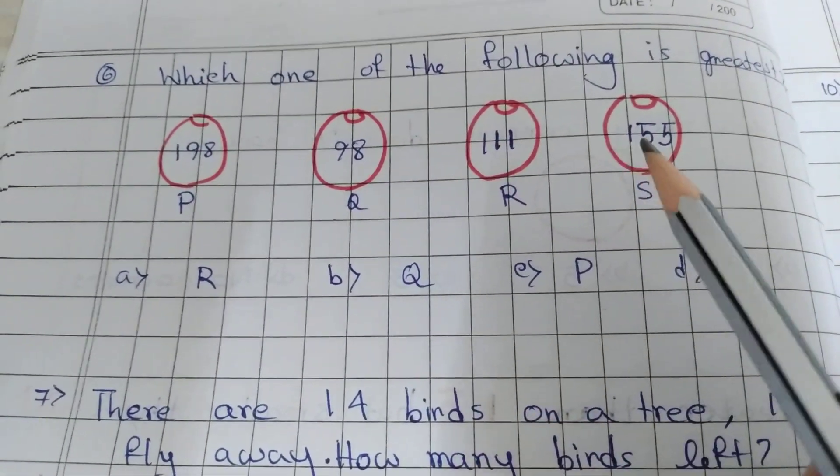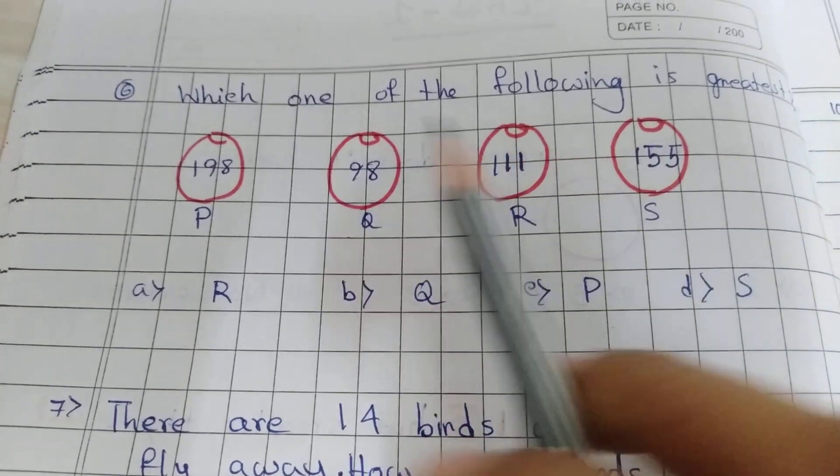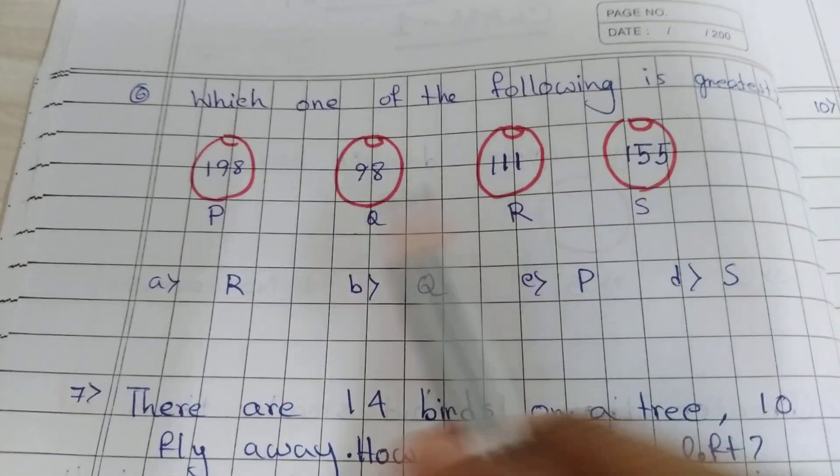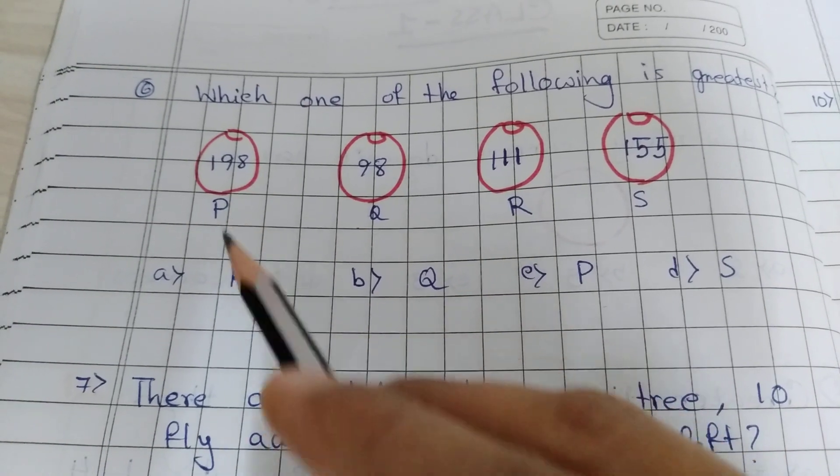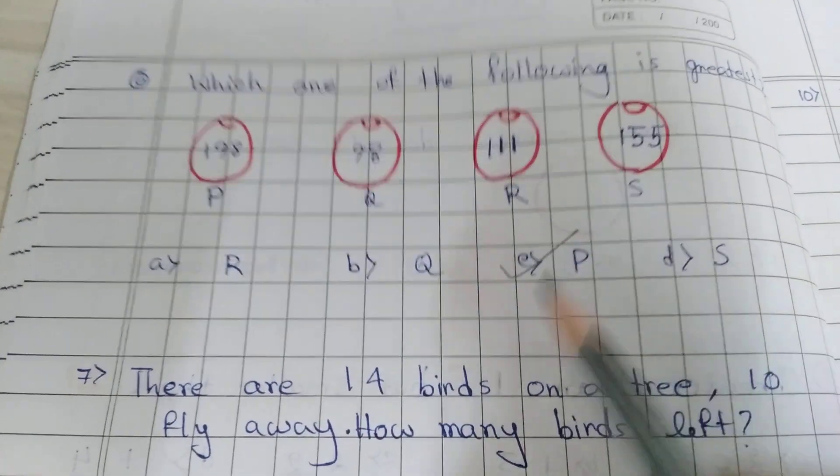Which one of the following is greatest? Greatest is 198. So P, option C is correct.